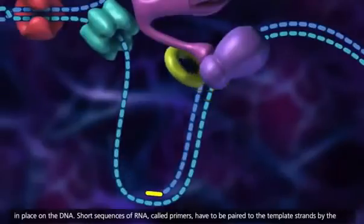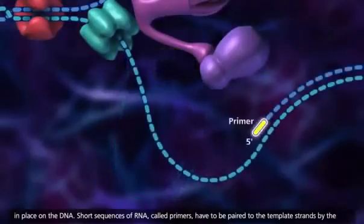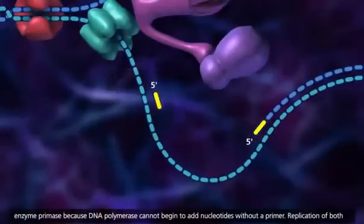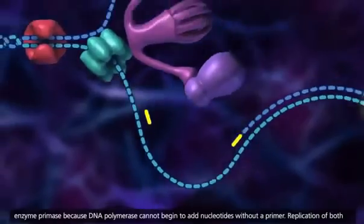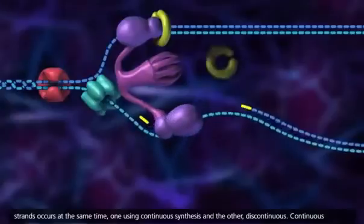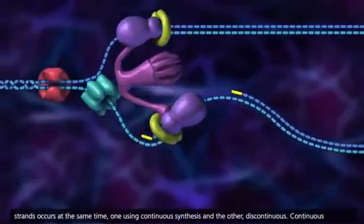Short sequences of RNA, called primers, have to be paired to the template strands by the enzyme primase, because DNA polymerase cannot begin to add nucleotides without a primer. Replication of both strands occurs at the same time, one using continuous synthesis and the other discontinuous.